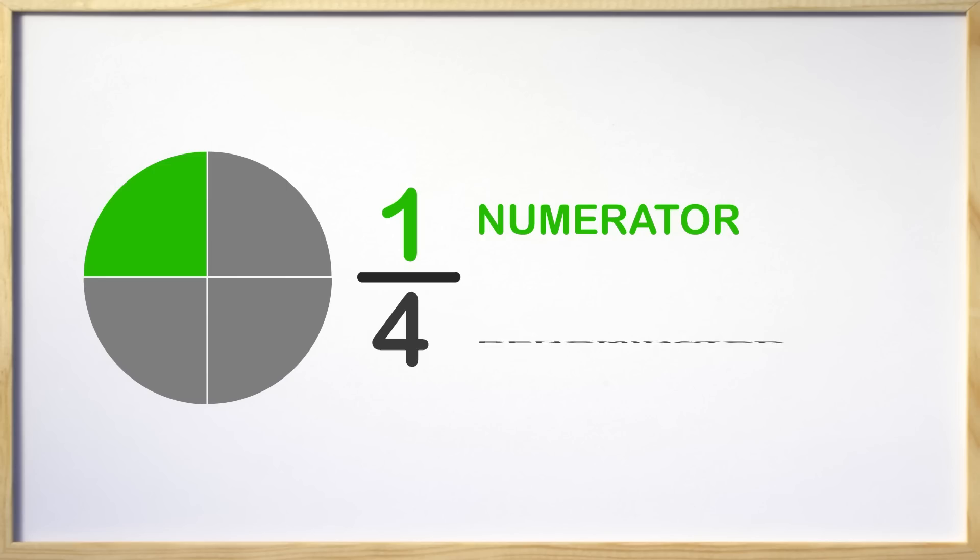The number on the bottom is the denominator. The denominator tells you how many equal parts there are in all. This circle has four equal parts, so the denominator is four. One fourth of the circle is colored green.